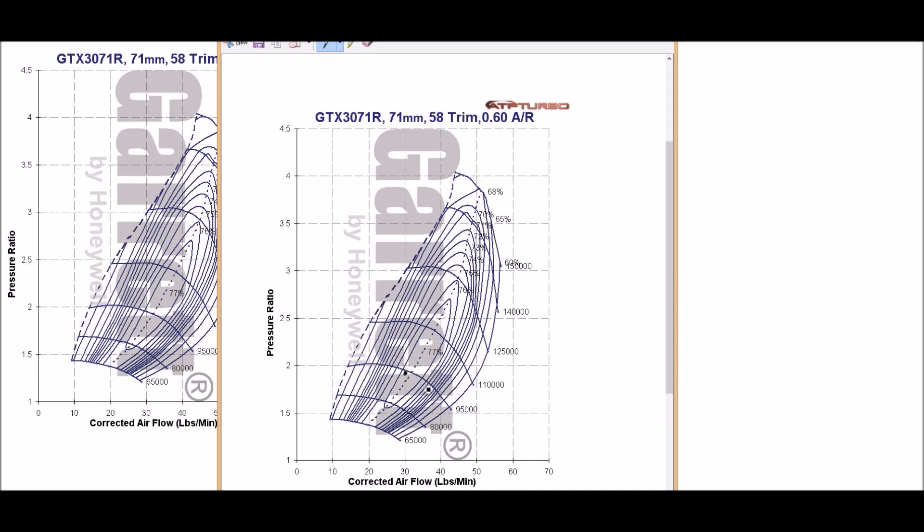And let's say I calculate my mass flow at redline, which I will go over in the next video, and that's at 50 pounds per minute. Well now, since I'm fully spooled at 3000 rpm, my pressure ratio will remain constant. So I can simply draw a line from here to here.